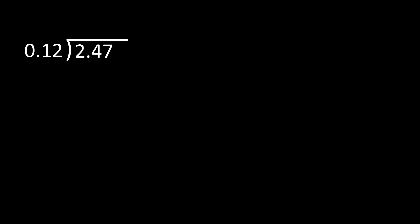In this problem, we have 2 and 47 hundredths divided by 12 hundredths. The first thing I'm going to do is look at my divisor — 12 hundredths. My divisor has to be a whole number, so I'm going to move the decimal point two places to the right. If I move the decimal point in the divisor, I have to move it the same number of places in the dividend — two places to the right. Now I'm going to rewrite my problem so that I can clearly see that I have 247 divided by 12, and I'm going to divide like normal, keeping all of my numbers lined up. 24 divided by 12 is 2. The 2 needs to go over the 4 because I divided 24 by 12. 2 times 12 is 24, and 24 minus 24 is 0.